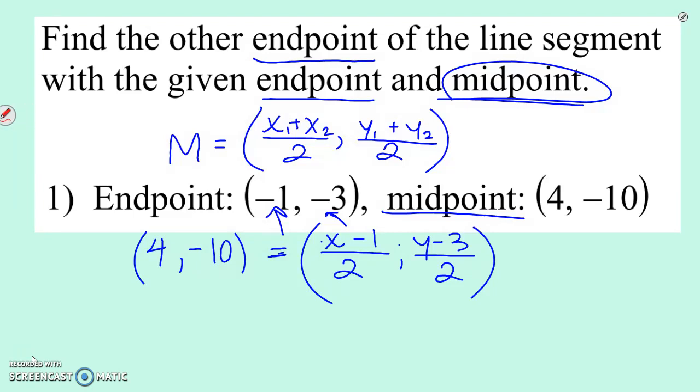So remember, our midpoint is 4 negative 10. So we want x minus 1 divided by 2 to be 4 and y minus 3 divided by 2 to equal negative 10. So I like to write this out. Some people like to think in their heads, well, what number minus 1 divided by 2 would give me 4? If you want to think about it in your head, that's totally fine. If you want to write it out with me, that's cool too.